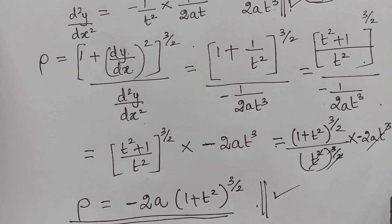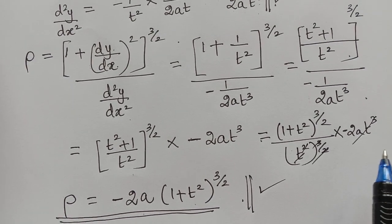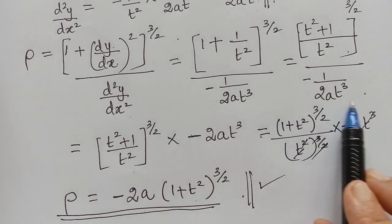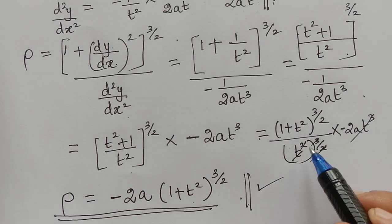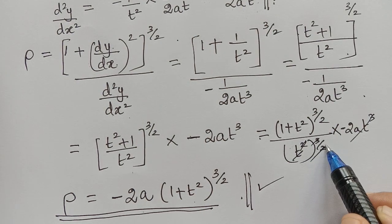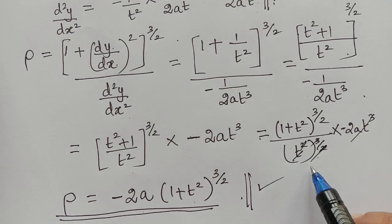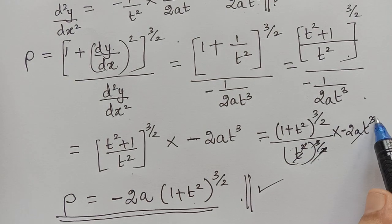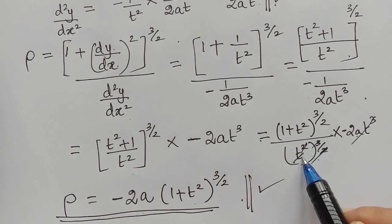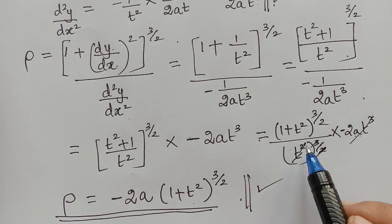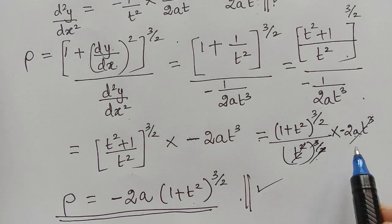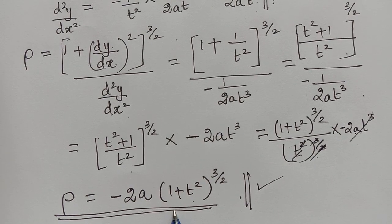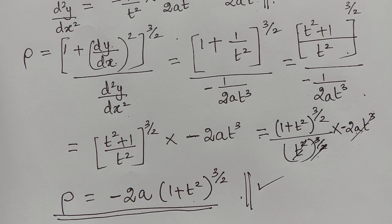So therefore the radius of curvature for the given parabola in parametric form is minus 2a multiplied by (1 + t²) to the power 3/2. The simplification involved cancelling the 2s and the t³ terms. Hope you have understood this problem. Thank you.